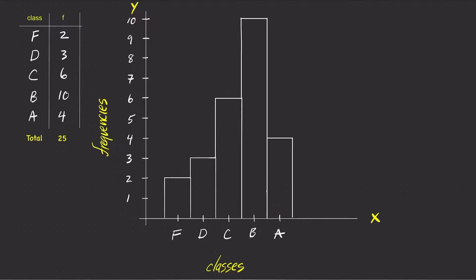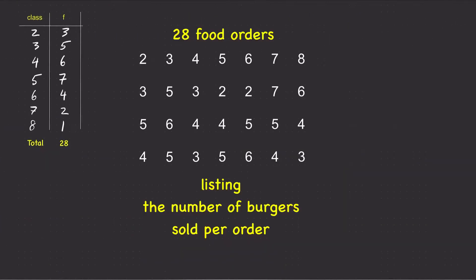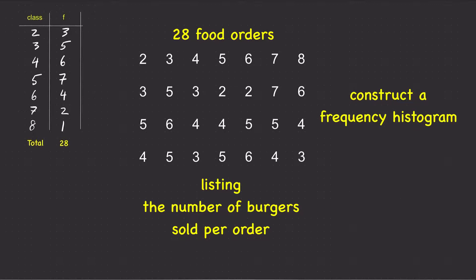A quick glance at the frequency histogram will show us the shape of the data distribution. In this case, notice how the data is skewed to the left. 28 orders were made and the number of burgers sold per order are listed here. Let's construct a frequency histogram.